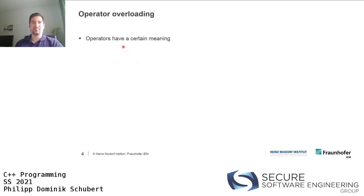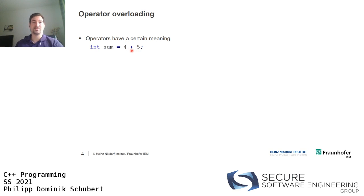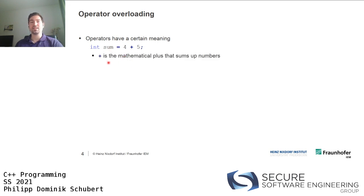Operator overloading — what is it? Operators have a certain meaning. For instance, operator plus with two integer literals on the left and right hand side implements addition and evaluates to their sum. Then you have the assignment operator, which takes the evaluated value on the right hand side and stores it in the variable on the left hand side. The token plus, in this context, is just the mathematical plus that sums up numbers.